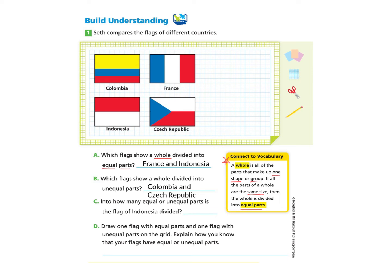Let's take a look at Part C: into how many equal or unequal parts is the flag of Indonesia divided? We look at Indonesia and see that there are two parts, and we have identified them as equal — one red and one white part. So we can answer that there are two equal parts.